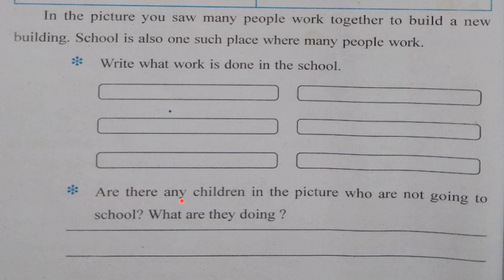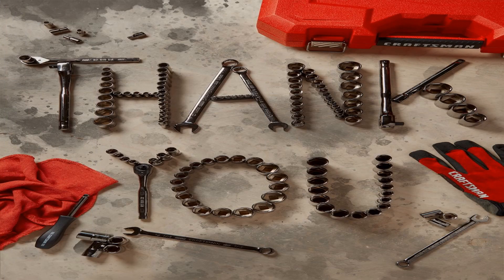Now next: are there any children in the picture who are not going to school? What are they doing? In the picture, there is one boy at the tea stall who is serving tea to people. Some children are playing under the tree. One girl, Mamta, is going with her father to sell watermelons. All these children are not going to school. I will send you a PDF where all the answers are written.